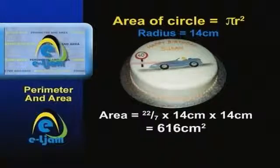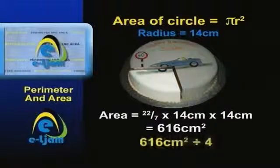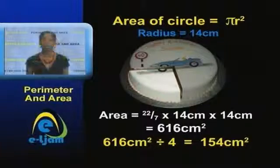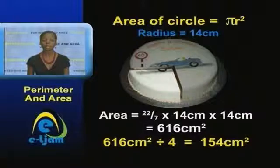How would we find the area of the top of a slice of the cake if it is divided into 4? To find the area on top of a quarter of the cake, we would simply divide by 4, which would give us 154 centimeters squared. That concludes the first part of mensuration. Join me again for part 2, where we will look at measurement in three-dimensional objects.